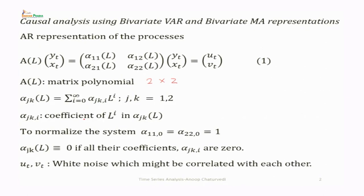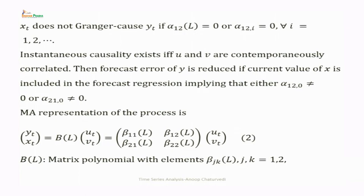To normalize the system, we take α₁₁(0) = α₂₂(0) = 1. Then α_jk(L) is equivalent to 0 if all coefficients α_jk(i) are 0. x_t does not Granger cause y_t if α₁₂(L) = 0, or equivalently the coefficients α₂₁(i) = 0 for all i = 1, 2, and so on.